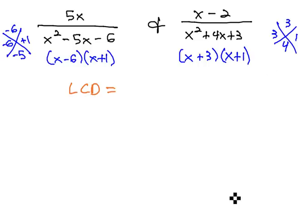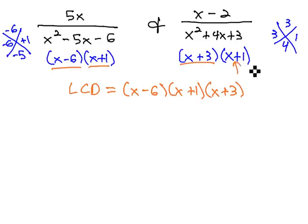For our least common denominator, we list each factor, x minus 6, and x plus 1, and x plus 3. And we already have the x plus 1, so we don't list it again.